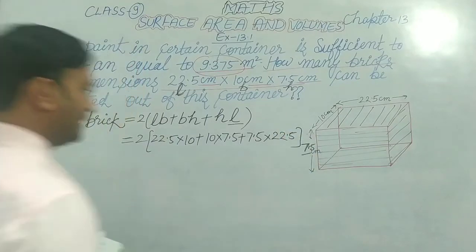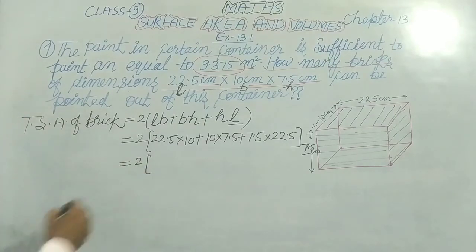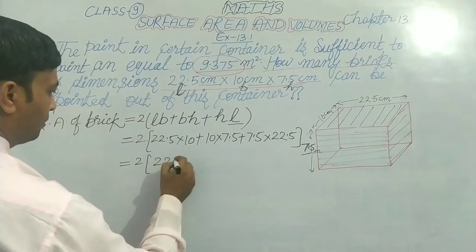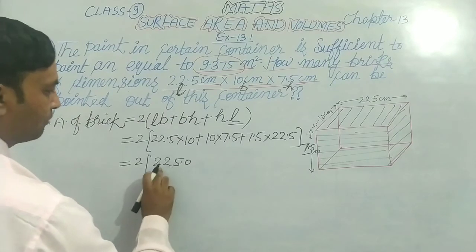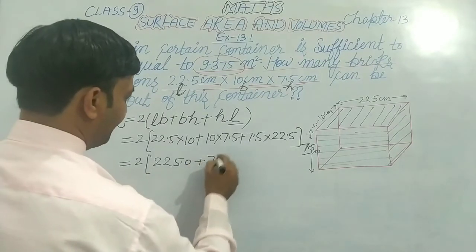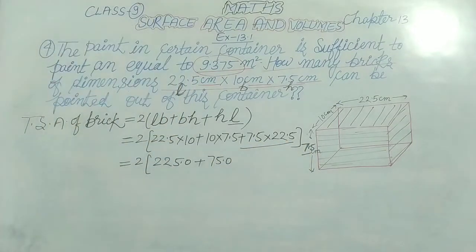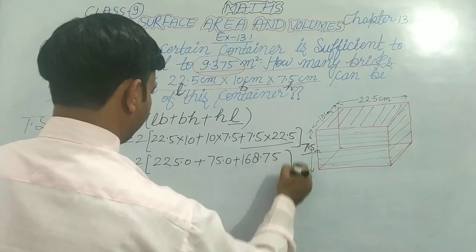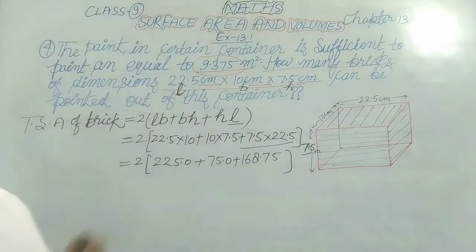Now we have to choose the value of L here. We get 75.00 and when we do this multiplication we get 168.75. We can multiply directly and after this we add.